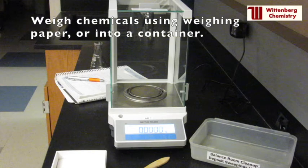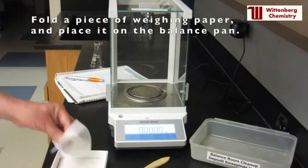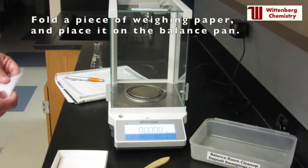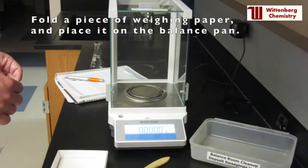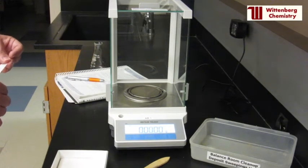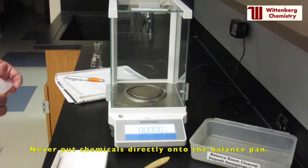Solids should be weighed onto weighing paper or directly into a container. This video will show you how to use weighing paper. Fold a piece of weighing paper diagonally, slide open the balance door, and place the weighing paper on the balance pan.